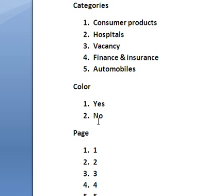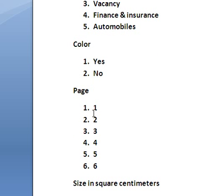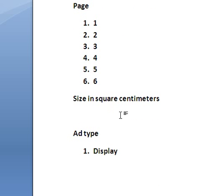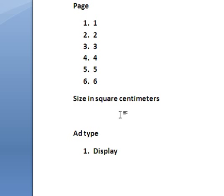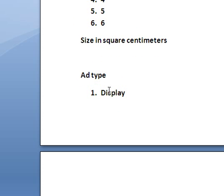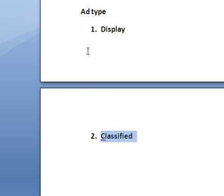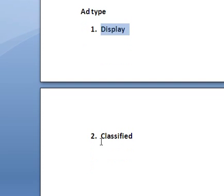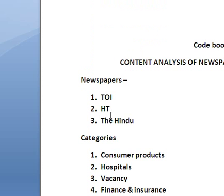Color is yes or no — either it is colored or it is black and white. The answers are coded: first and second, page one to one, two to two, three to three. Size is in square centimeters — we have left this blank as the space of the advertisement can take any value. Ad type is either displayed or classified. Every response has been given a code. So this is our code book.